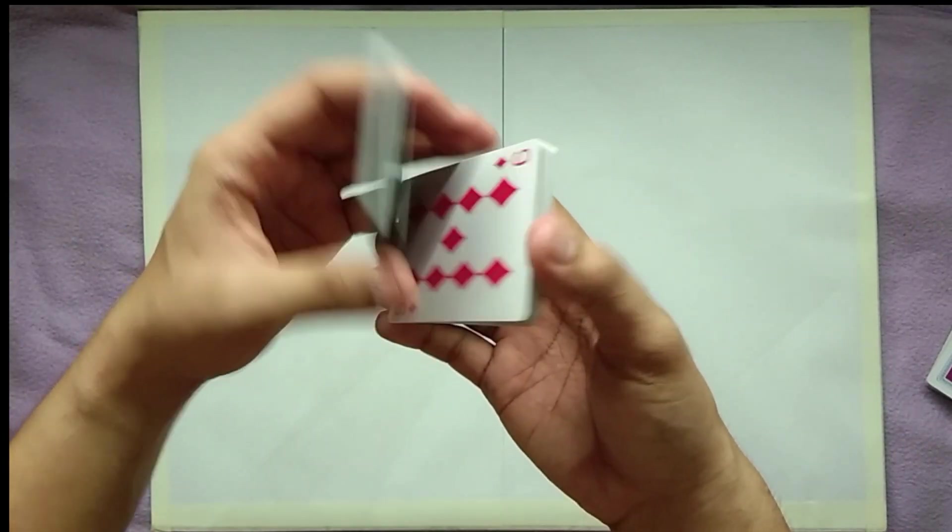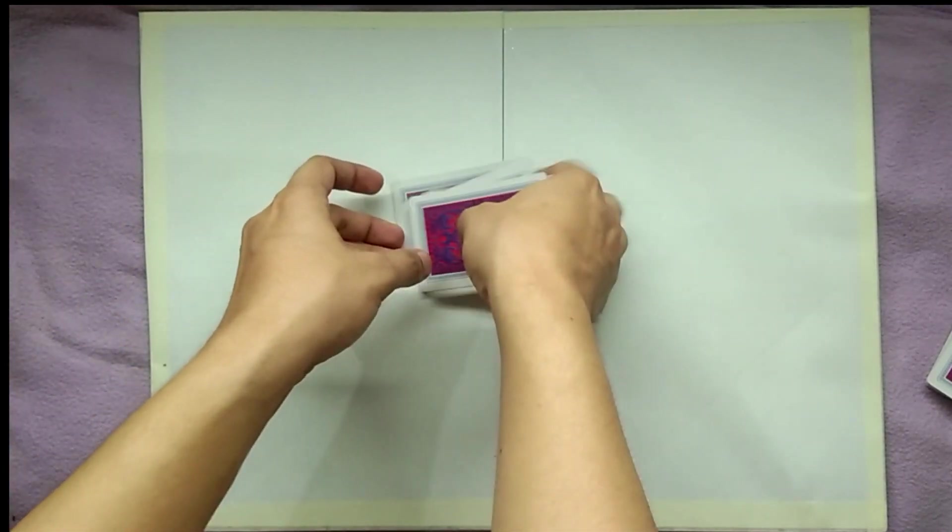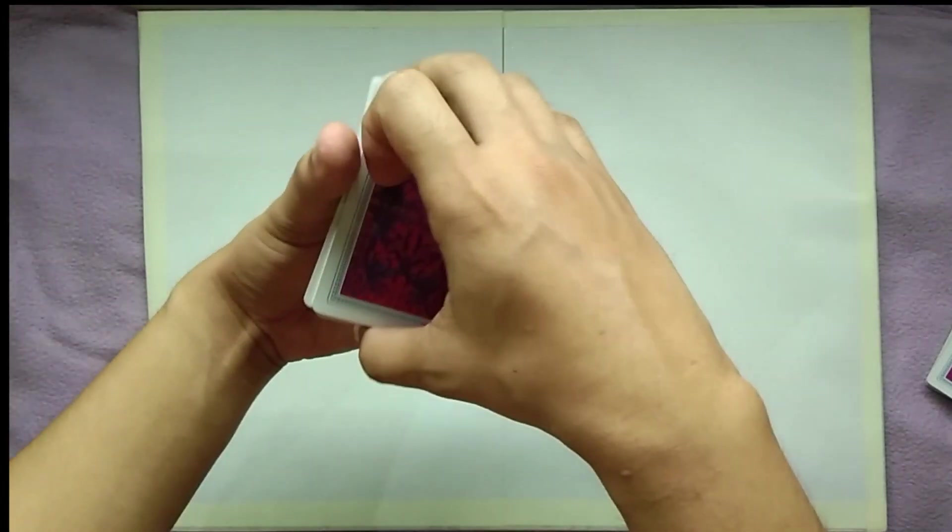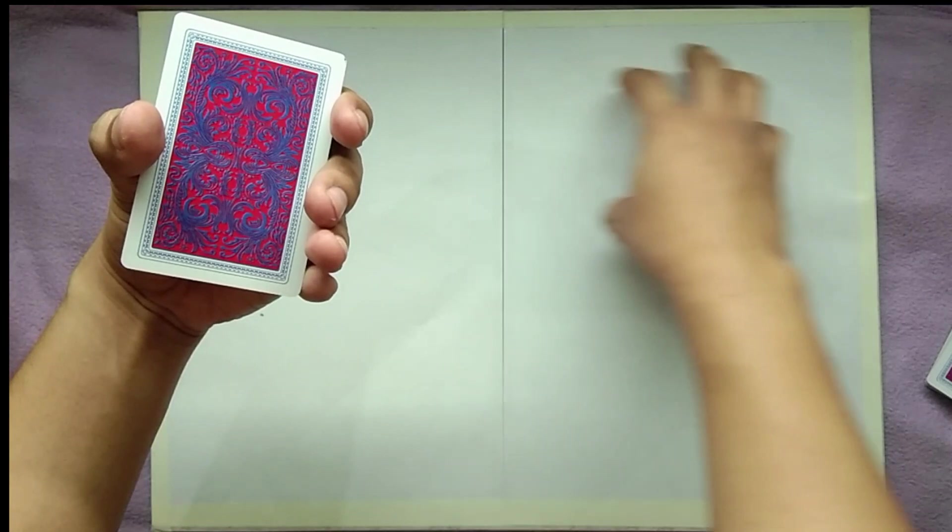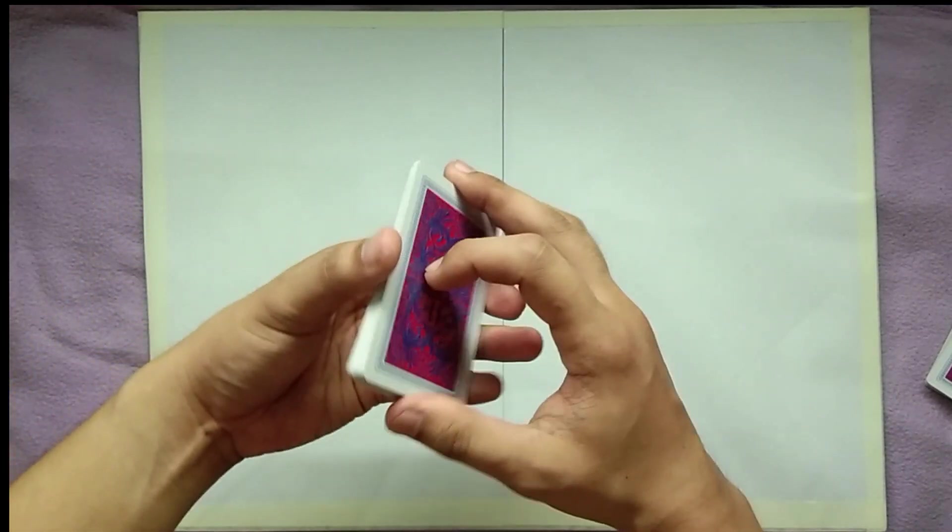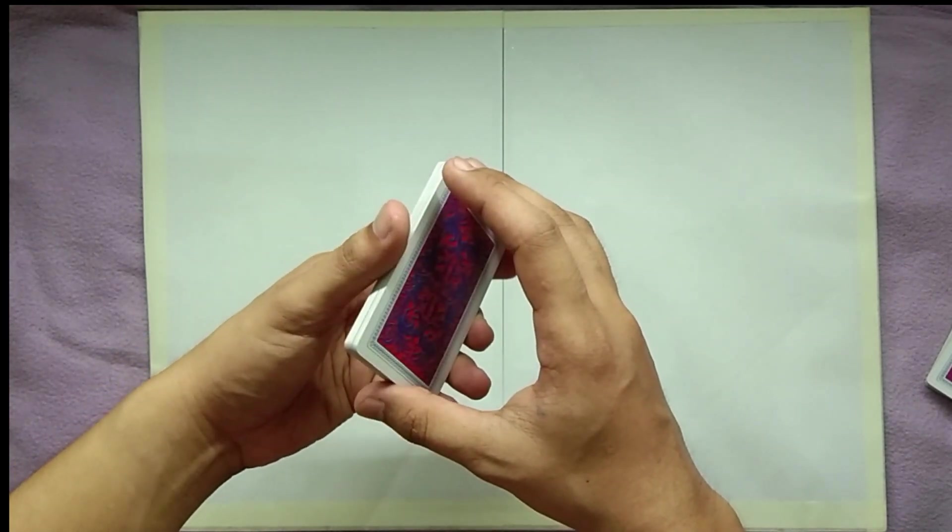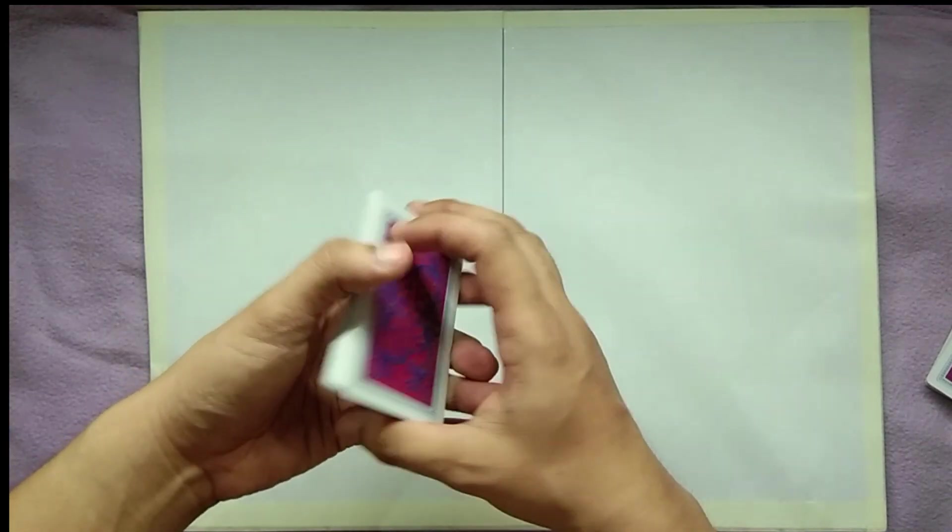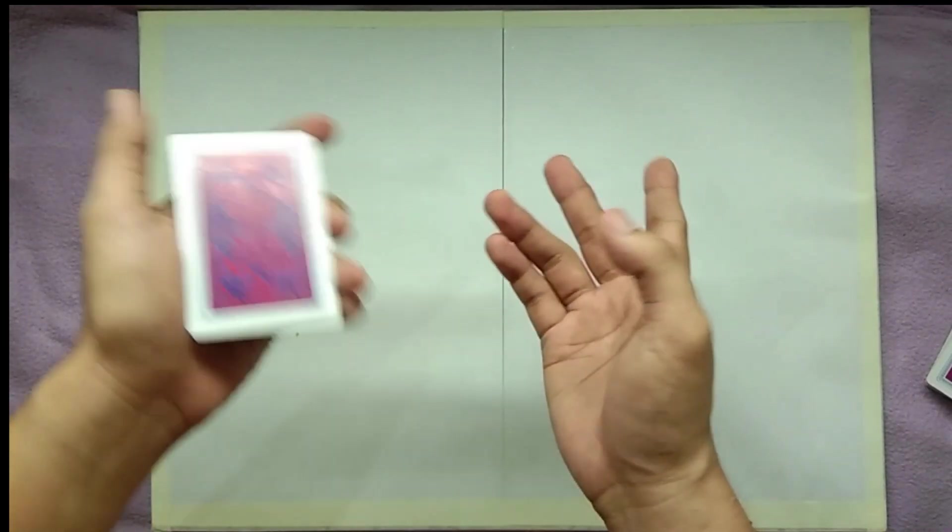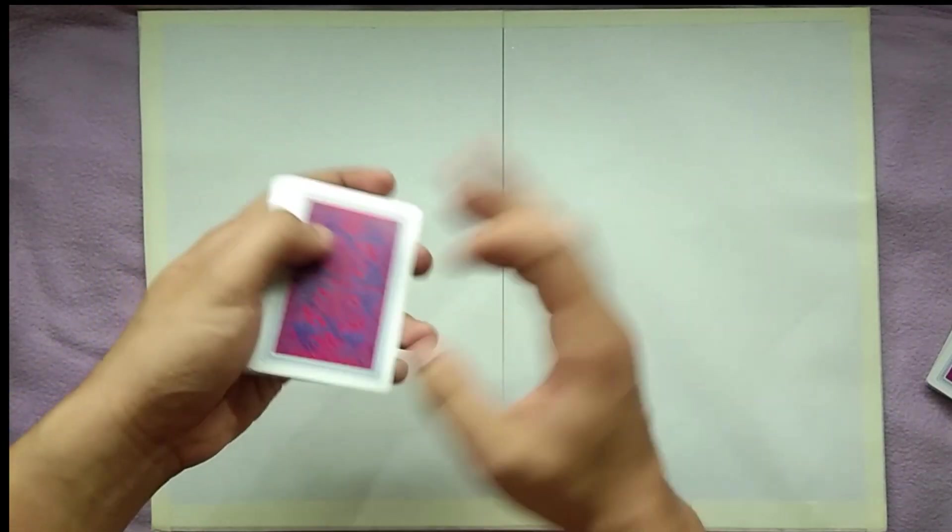Tell him that you will pile the cards into 3 sets. And in order to make the magic happens, he or she needs to point which set does his or her card belongs. Now this is the critical part. The set that your friend pointed should always be placed in the middle of the 3 sets. Now do this 3 times.